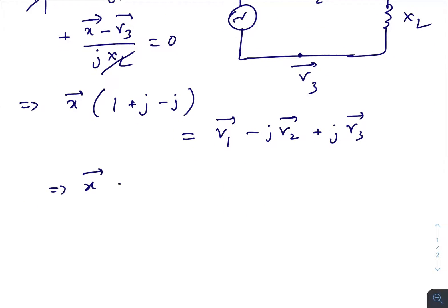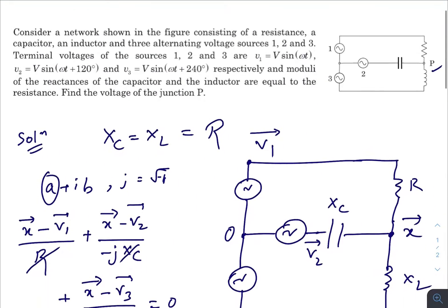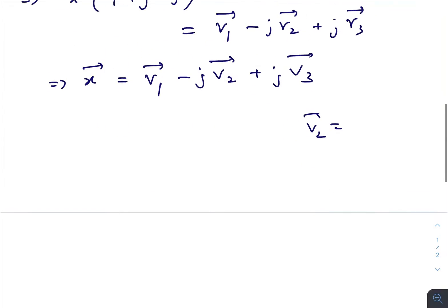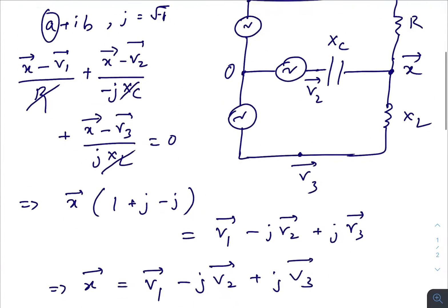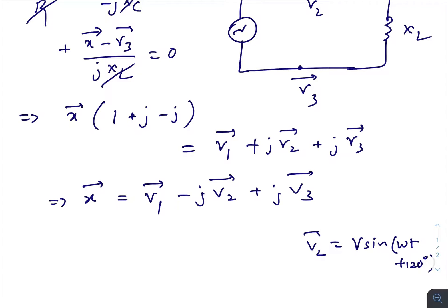Finally, X vector becomes V1 vector minus j·V2 vector plus j·V3 vector. Actually, let me correct a sign error here — this one will be plus and this will be minus. So: V1 − j·V2 + j·V3, with the corrected signs.